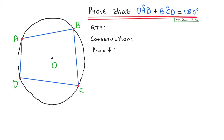They want us to prove the cyclic quadrilateral theorem that states that interior opposite angles of a cyclic quad are supplementary, meaning they add up to 180 degrees. As you can see on your screen, we need to prove that angle DAB plus angle BCD will give us 180 degrees.